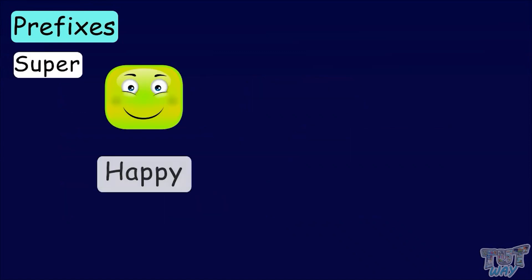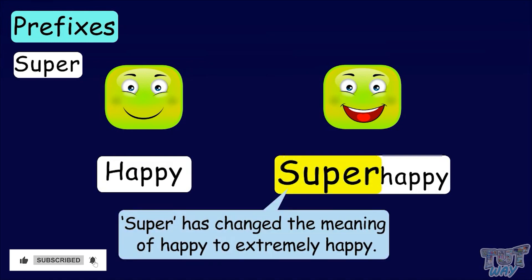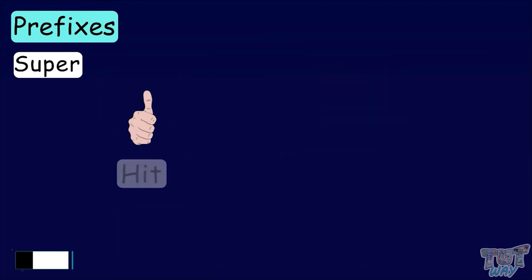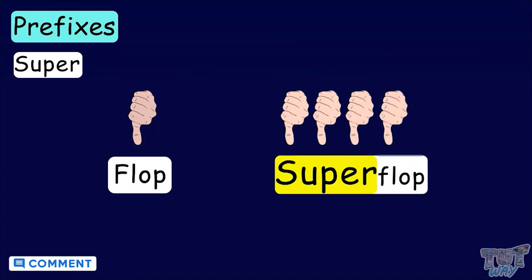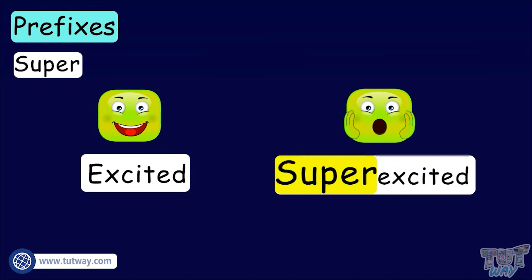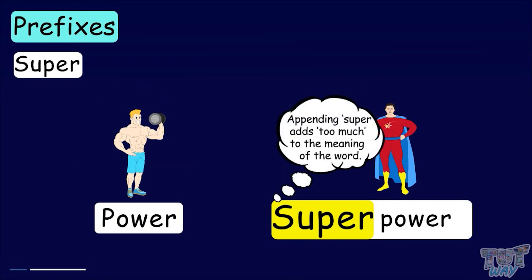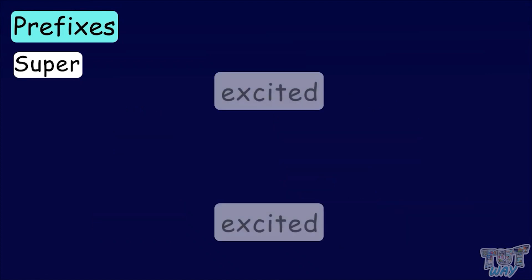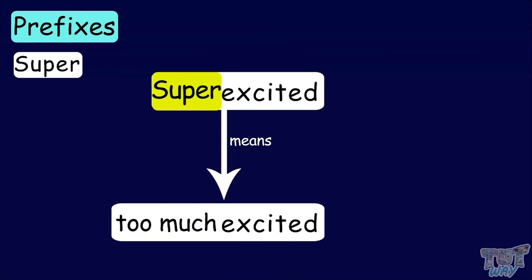Now let's see the usage of another prefix. Happy, super happy. Super has changed the meaning of happy to extremely happy. Hit, super hit. Flop, super flop. Excited, super excited. Power, superpower. Adding super changes the meaning of a word by adding too much to it — so excited becomes too much excited by adding super to it.